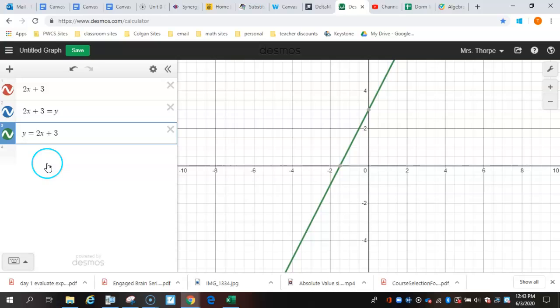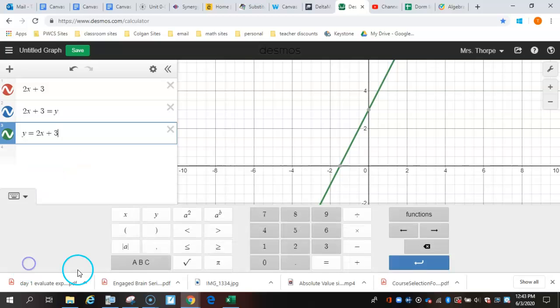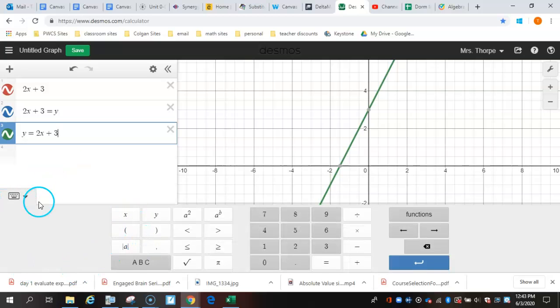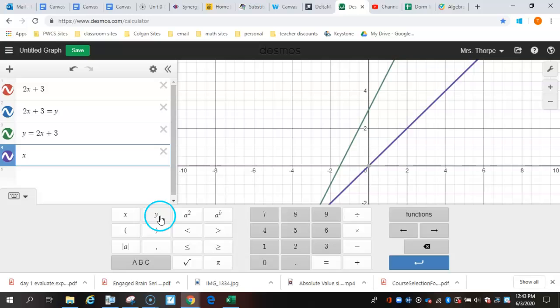So that was me typing on my laptop keyboard. You could do that on any of your devices. You can also go into your keypad, Desmos keypad, and use this x or this y, and it will give you those variables as well.